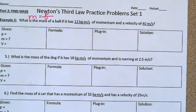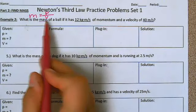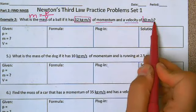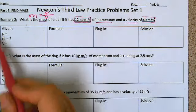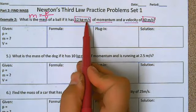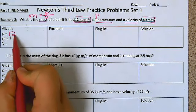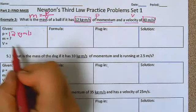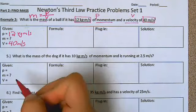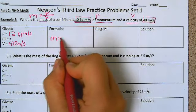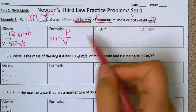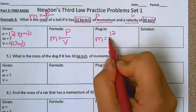Let's look at example number two. It says: what is the mass of a ball if it has 12 kilograms meters per second of momentum and a velocity of 40 meters per second? The 12 kilogram meters per second is going to be the momentum — remember that momentum is represented by P not M. So P is 12 kilograms meters per second and the velocity V is 40 meters per second. We are looking for the mass M, so our formula is: mass equals momentum divided by velocity. We're going to plug those numbers in to show our work, giving us 12 divided by 40.